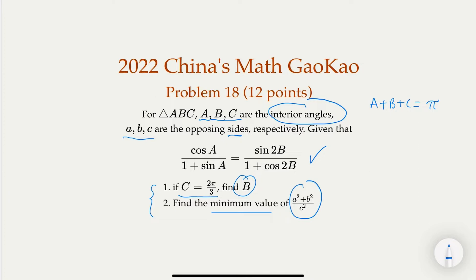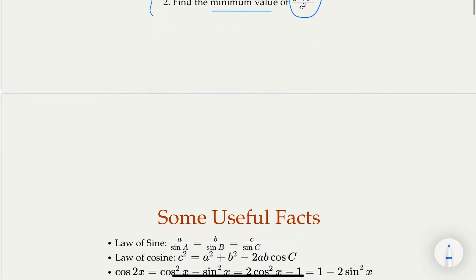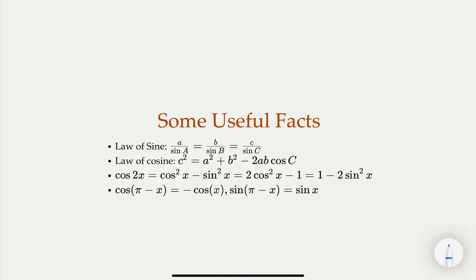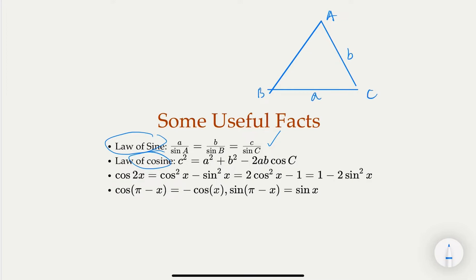This problem is good to review some useful trig identities, specifically law of sine and law of cosine. For the law of sine, in a triangle with angles A, B, C and corresponding sides a, b, c, the ratios a/sin(A), b/sin(B), and c/sin(C) are all constant — the ratios are the same.